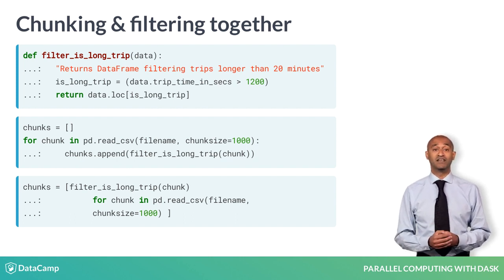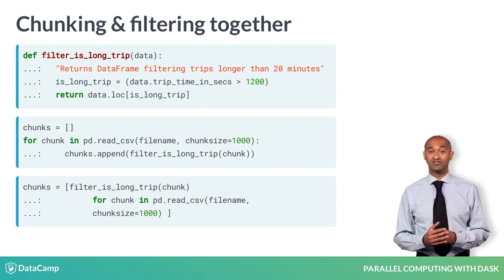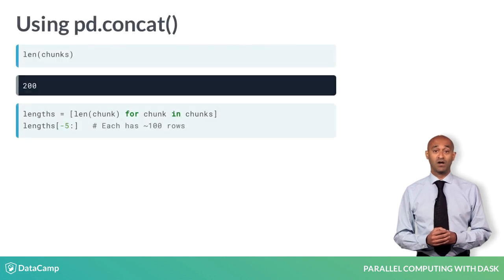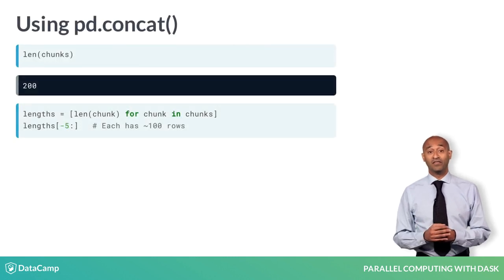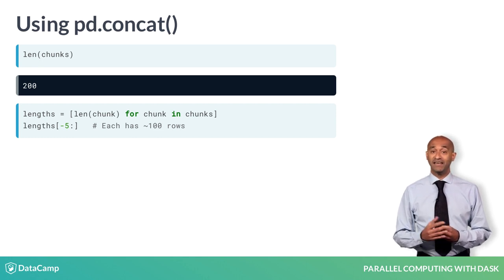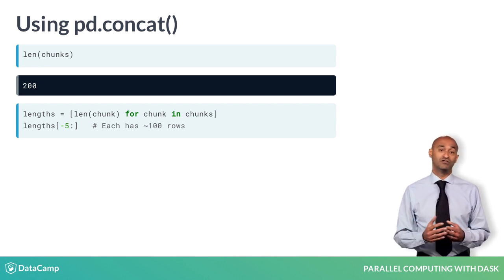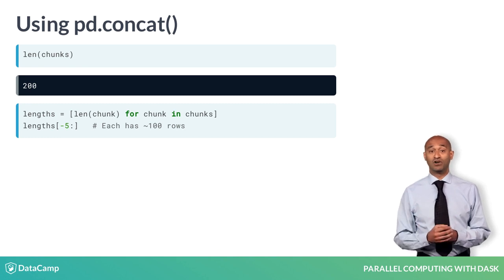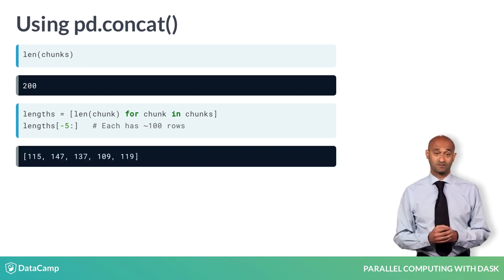In both cases, each chunk is filtered as it is read from disk. We can use another comprehension called lengths to see that the dataframes in the list chunks each have around 100 to 200 rows rather than 1,000 rows in the unfiltered chunks.